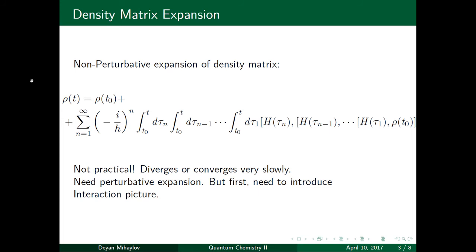So, straight up expansion of the density matrix. Well, first, before we try to perturbatively expand it, we can just try a straight up expansion. So, this is like integration of the Liouville von Neumann equation, where on the right-hand side you have the time derivative of rho, and on the left-hand side you have the time derivative of the density. On the right-hand side, you have the commutator between the Hamiltonian and the density, but when you integrate over at different times, you get an equation like this.